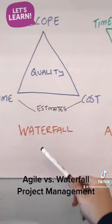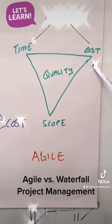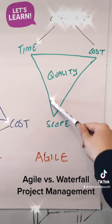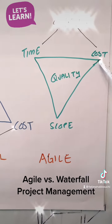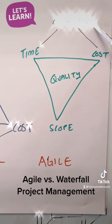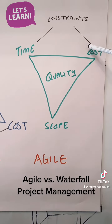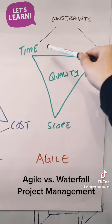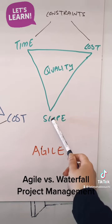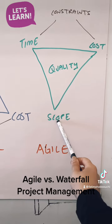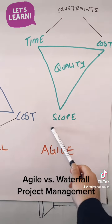In an agile environment, we flip the triangle upside down, where now you'll see time and cost become constraints. These are fixed based on your team, whereas your scope becomes the variable, which means we need to adjust our scope and be adaptive during the delivery of agile initiatives.